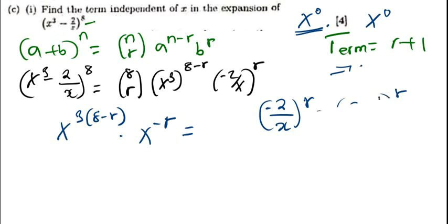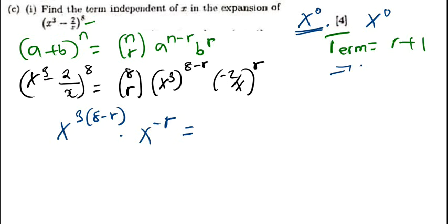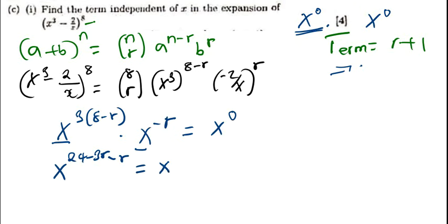Now this should be equal to — the term that doesn't have x has got x to the power 0. So I will set this equal to x to the power 0. That's the basic idea. Now if the bases are the same, we add the powers. So this is x to the power 3 times (8 minus r), that is 24 minus 3r, then I add the power which is going to be minus r again, equal to x to the power 0.